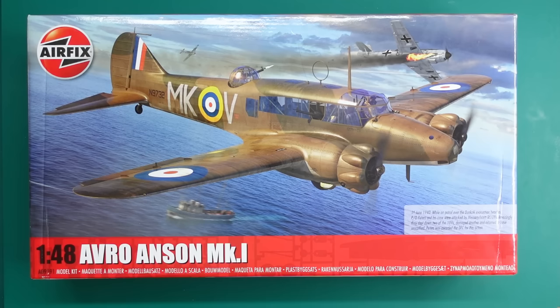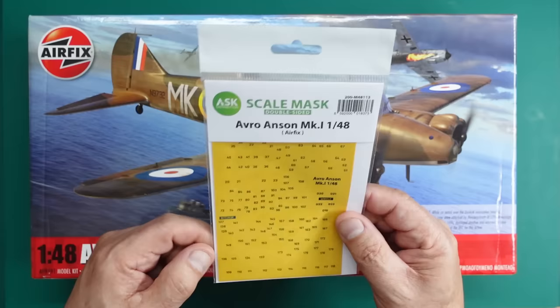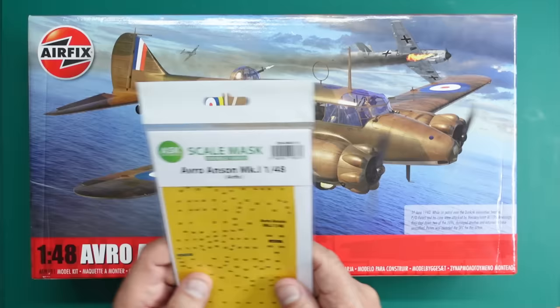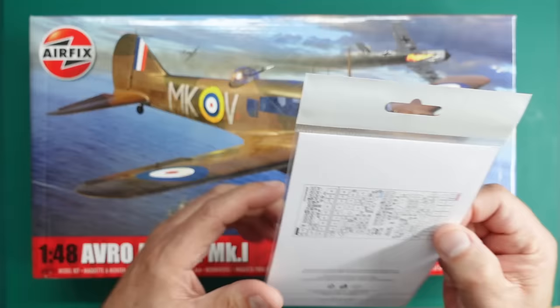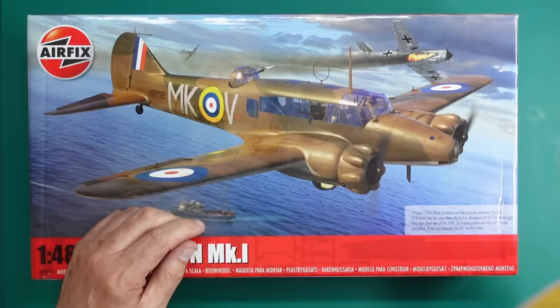And then lovely Peter over at ASK sent me the mask set for it. In here you've got the versions for both different windscreens as well, so really nice. This is the interior set, so you've got interior masks and exterior masks. We can put the interior masks on, spare all the internal framework, then take it off, put the windows in and then do all the external. You can imagine with all this glazing it's going to look absolutely amazing. I would thoroughly recommend buying this for this kit, even if you just get the single sided one. These are available in the UK from Hannants.